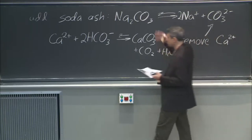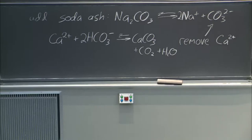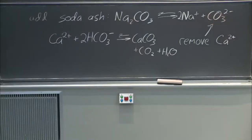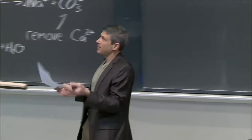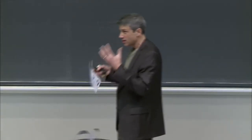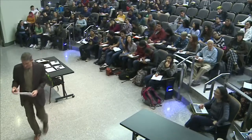You can also add lime, which gives you a source of OH-, and that takes out the magnesium. These are ways to change the chemistry of water so you don't have as many calcium and magnesium ions floating around causing problems. That was my 'why this matters.' And now we turn to what I started with: Exam Three. Look at all those topics — X-rays, XRD, defects, glasses, reaction rates, solubility, aqueous solutions, acids, bases. It's all there, and it's all there in you. If not, you've got two days.